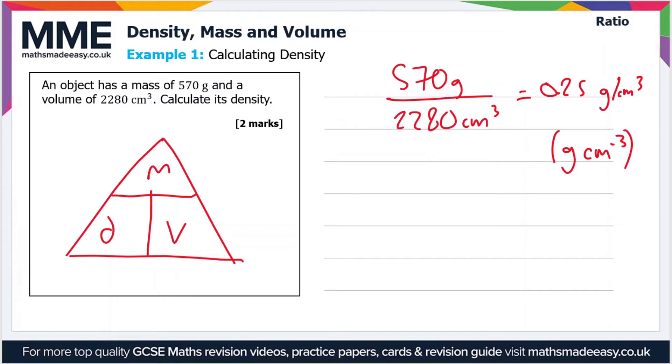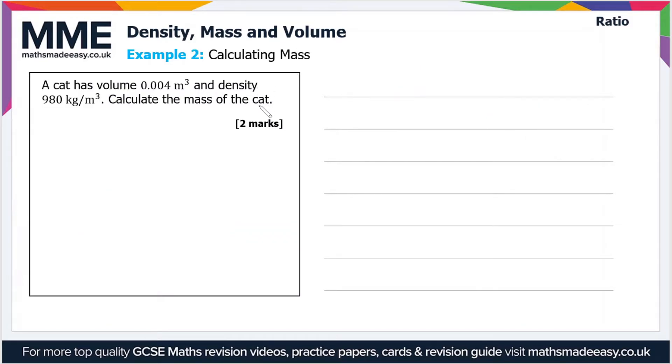Let's move on and have a look at a different example, but this time we're calculating the mass. A cat has a volume of 0.004 meters cubed and a density of 980 kilograms per meters cubed. Calculate the mass of the cat.